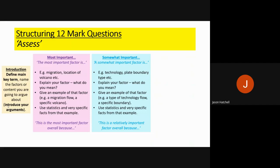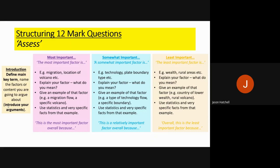You finish a 12 mark question with the least important factor. For example, it could be wealth, or a volcano occurring in a rural area. Explain that factor from your own geographical knowledge in as much detail as possible, give an example — such as a country of lower wealth, or Eyjafjallajökull in Iceland as a mainly rural country with limited volcanic impacts. Use specific statistics and facts, and end: 'Overall this is the least important factor because...' finishing that sentence.